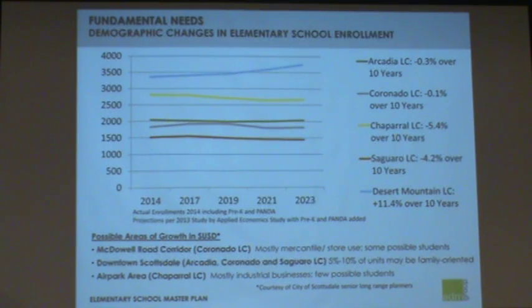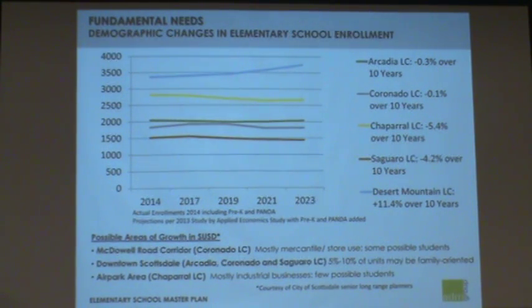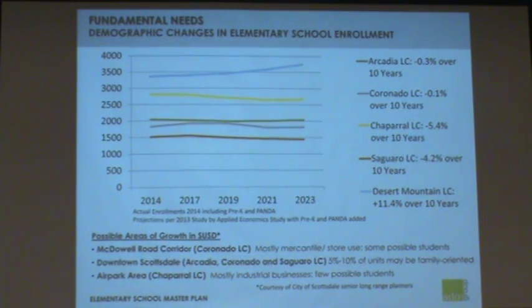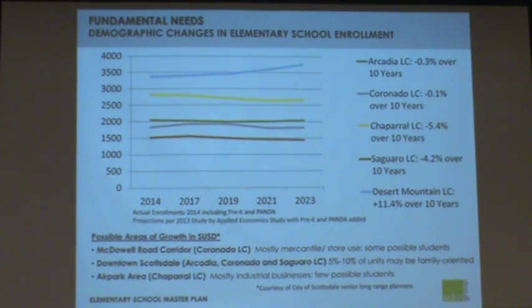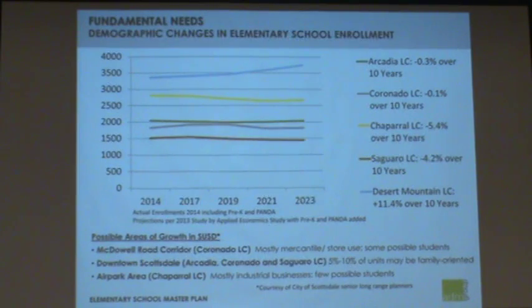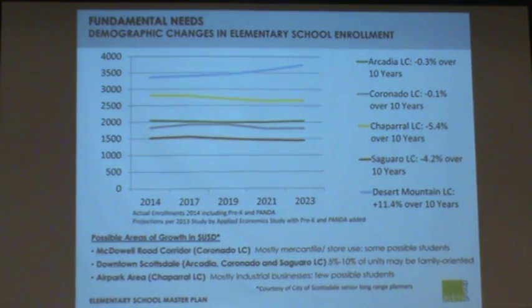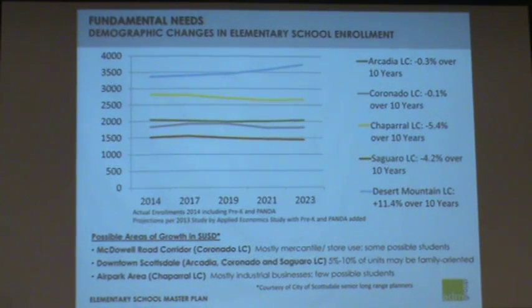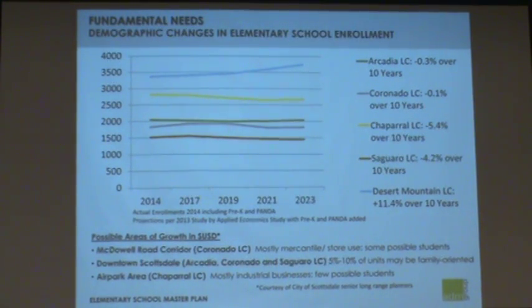The district met with the City of Scottsdale's senior long-range planners to see what's happening in Scottsdale. Some things going on include the McDowell Road corridor, which affects Coronado and is mostly retail. There's downtown Scottsdale with Arcadia, Coronado, and Squirrel, which has 5 to 10% of units that could bring families to the district. The Hare Park area in the Chaparral Learning Community is mainly industrial but could bring a few possible students. New housing developments are also going up, and there are other factors within communities that will affect demographics.